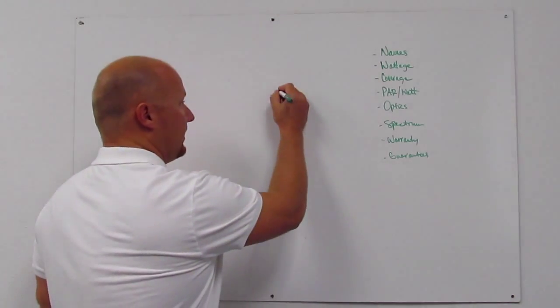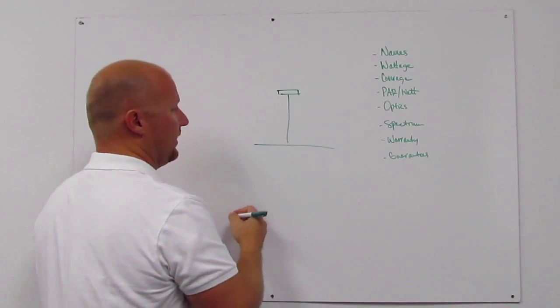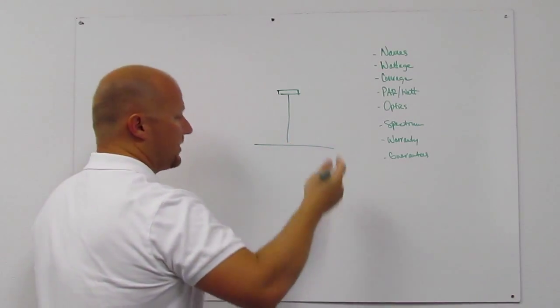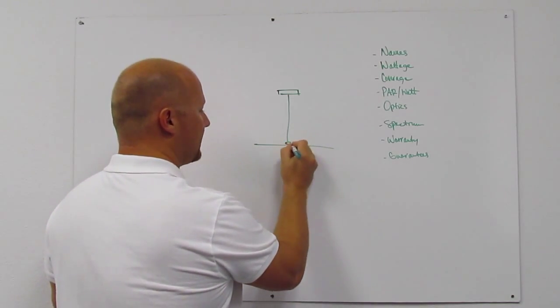If you take a light, any given light source, and measure straight directly down underneath it, this is the center PAR. They'll say, oh, I have 2,000 PAR, some crazy number at this center point.